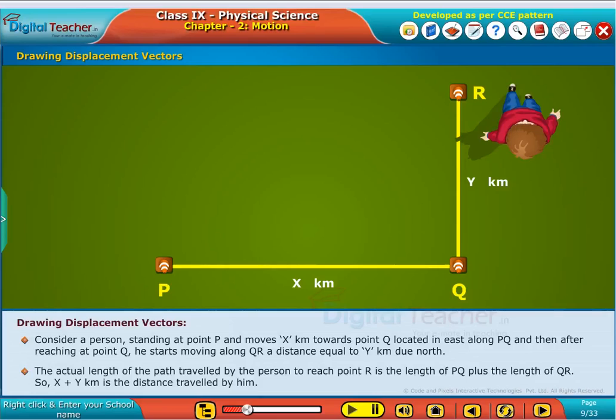The actual length of the path travelled by the person to reach point R is the length of PQ plus the length of QR. So, X plus Y kilometers is the distance travelled by him.